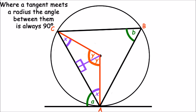From the circle theorem that states that where a tangent meets a radius the angle between them is always 90 degrees, we know that A plus X equals 90 degrees. And we can rearrange this so that A is equal to 90 degrees minus X.